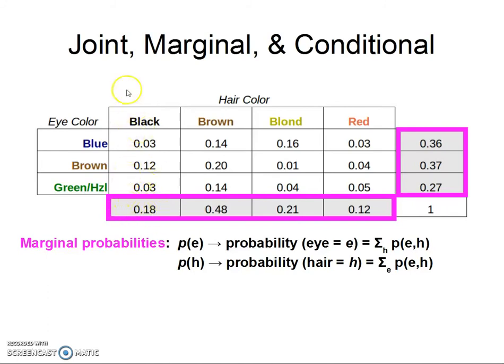So the marginal probability that the hair is black is the sum over all the different eye colors who have black hair. Same thing for brown: in our population, 48% of people have brown hair, adding up the people who have brown hair and blue eyes, brown hair and brown eyes, and brown hair and green or hazel eyes.